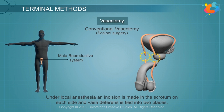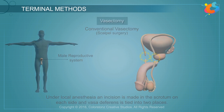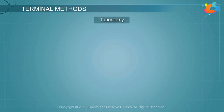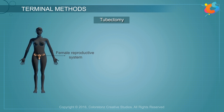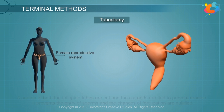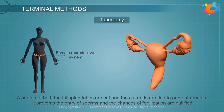Thus the sperms produced cannot reach the urethra. Tubectomy is involved in the female reproductive system. In this surgical method, a portion of both the fallopian tubes are cut and the cut ends are tied to prevent reunion.